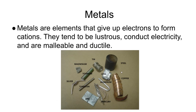Here are some examples of metals I was able to scrounge up without too much trouble: mercury, zinc, tungsten, tin, lead, a piece of steel, and copper. These are ones that are used an awful lot in industry and are some of the most common ones.